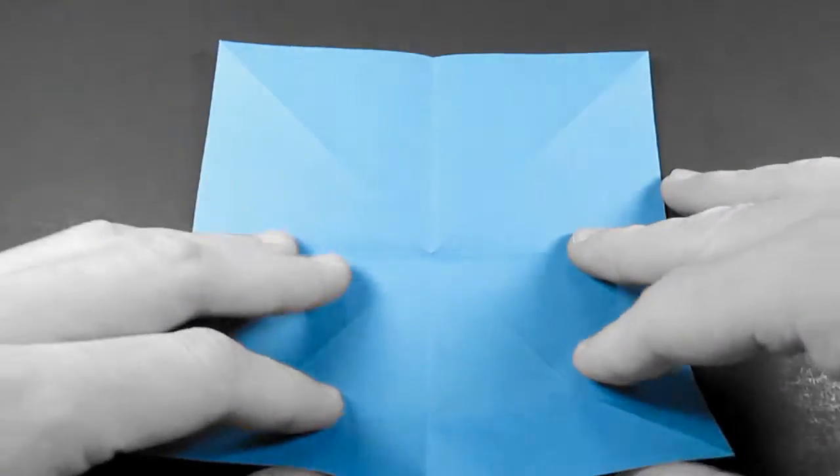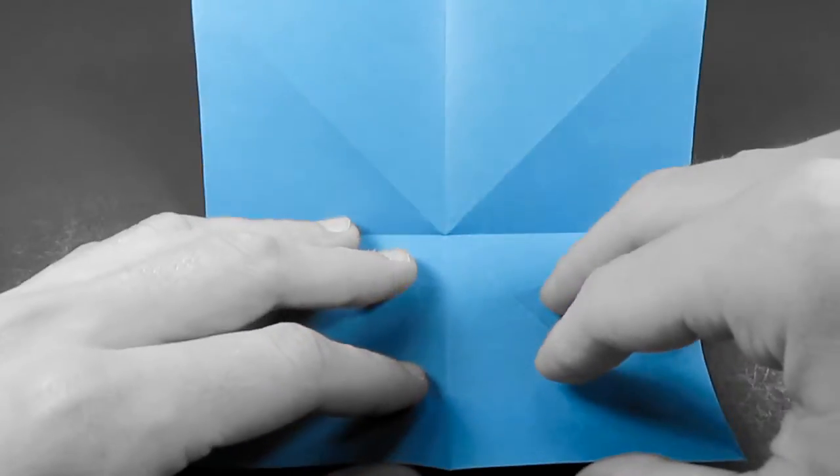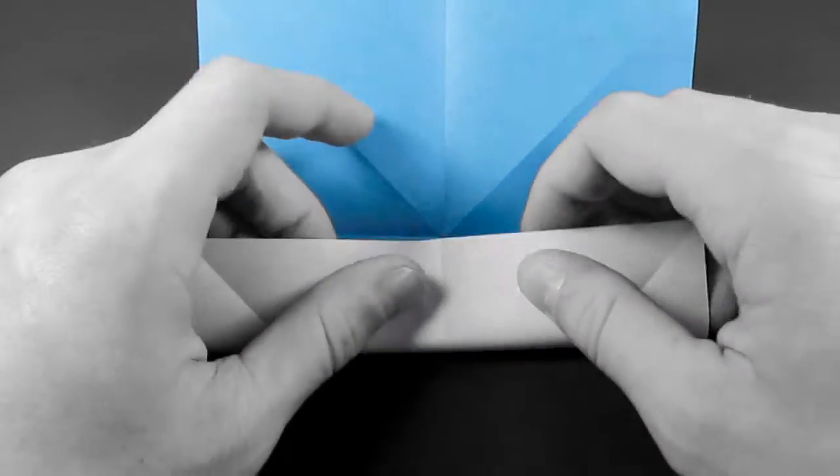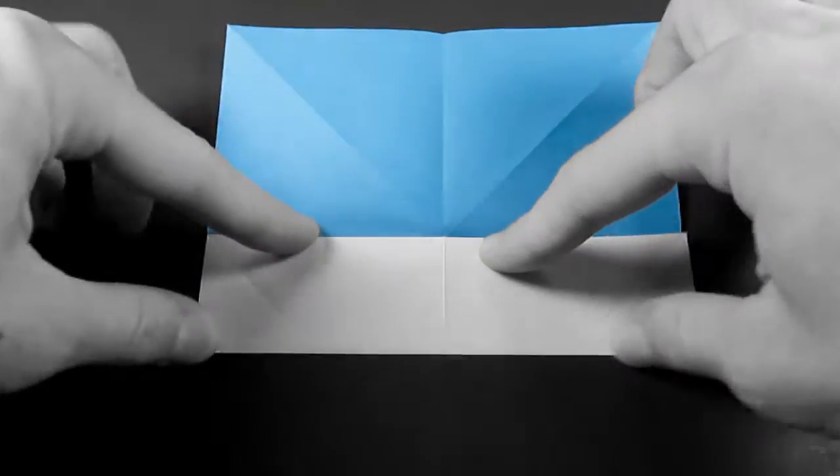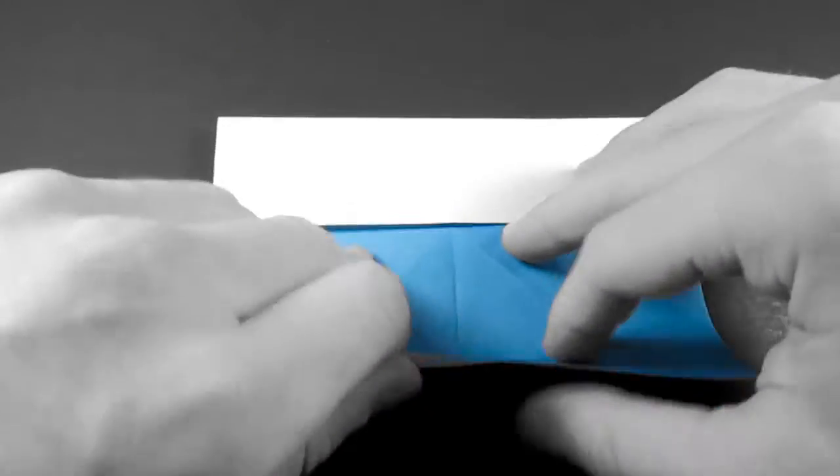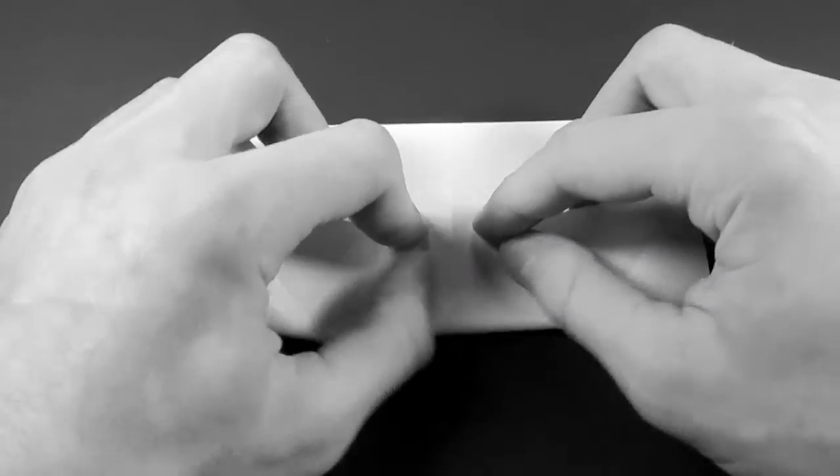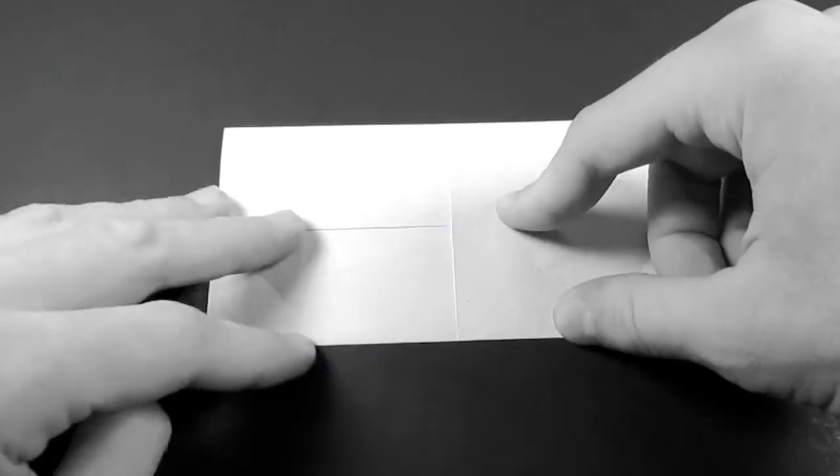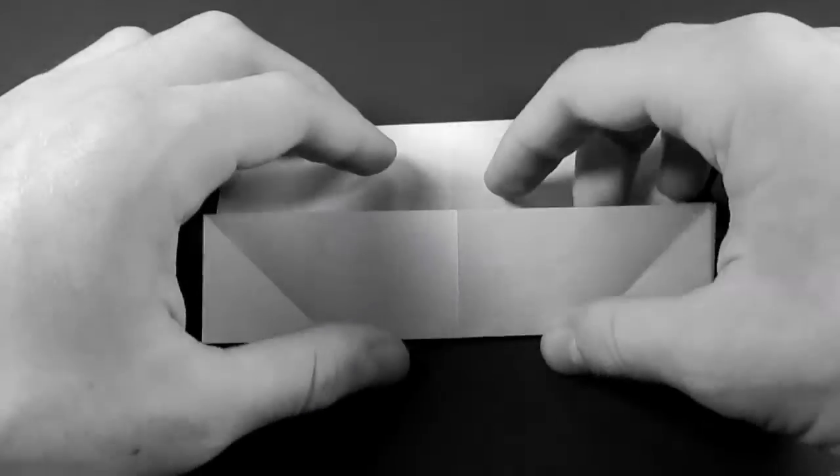And now what we're going to do is fold the edges of all four sides into the center, like so. So we'll fold the bottom edge in. Then we'll rotate, fold the top edge in, but it's now the bottom edge. Whoa, mind blown. And let's unfold that.